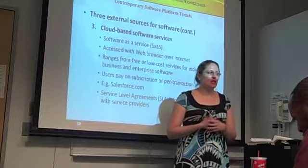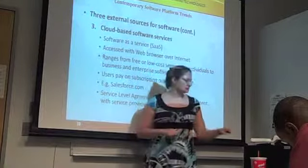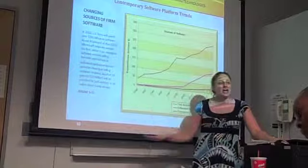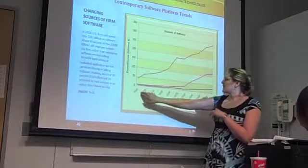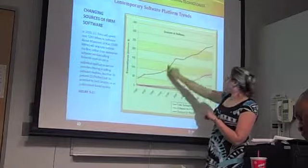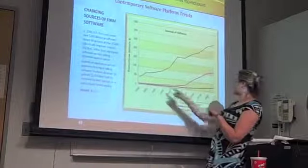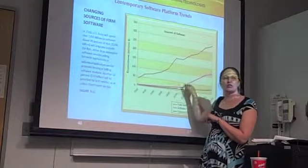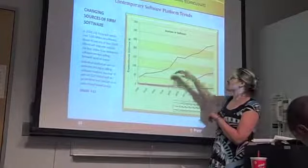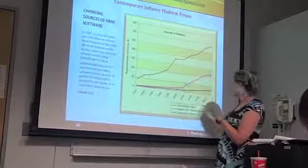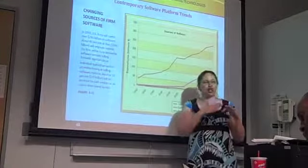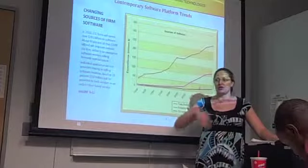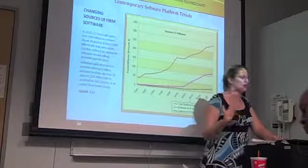This chart shows how the sources of software are changing over time. In the 1990s through 2000, you see more of the overall software expenditures going toward Software as a Service versus other types of software purchases, as well as outsourced software. There are trends toward utilizing software as a service or outsourcing versus creating software in-house or purchasing off-the-shelf software.